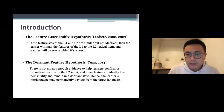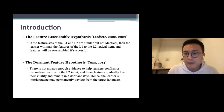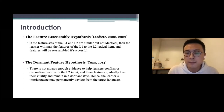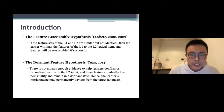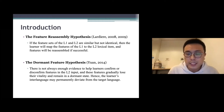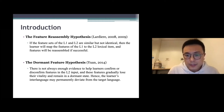The dormant feature hypothesis claims that there is not always enough evidence to help learners confirm or disconfirm features in the L2 input, and these features gradually lose their vitality and remain in a dormant state, hence the learners' language may permanently diverge from the target language.